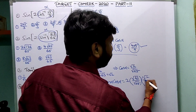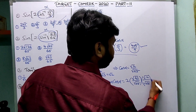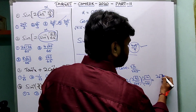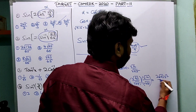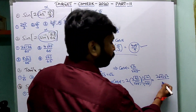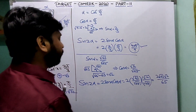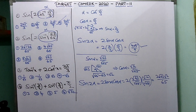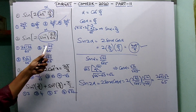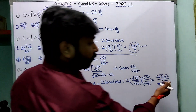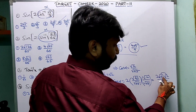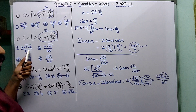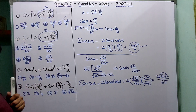sin(2α) = 2·(√63/√65)·(√2/√65) = 2√63·√2 / 65. The denominator is 65. The numerator: 2·√(63×2) = 2√126. So the answer is 2√126/65. The first option is correct.